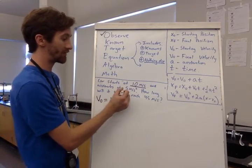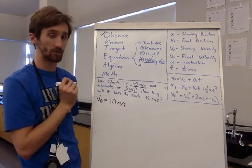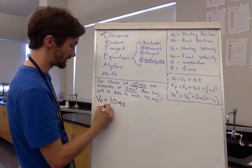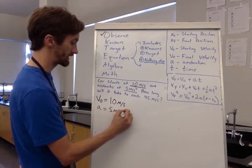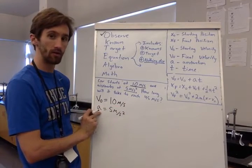And accelerates at 5 meters per second squared. So my acceleration equals 5 meters per second squared. Again, symbol equals number.